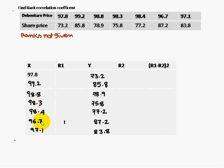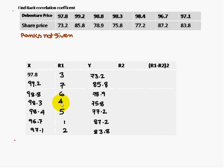The least value in the x column (debenture price) is 96.7, so it is given rank 1. The next highest value is 97.1, given rank 2. Then 97.38 gets rank 3, 98.3 gets rank 4, 98.4 gets rank 5, and 98.8 gets rank 6. Then 99.2 gets rank 7.